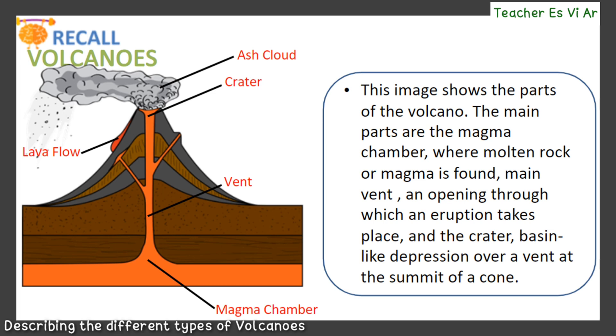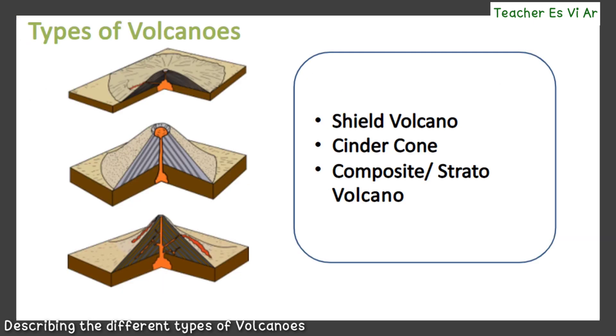This image shows the parts of the volcano. The main parts are the magma chamber where molten rock or magma is found, the main vent (an opening through which an eruption takes place), and the crater (a basin-like depression over a vent at the summit of a cone). There are three types of volcanoes.